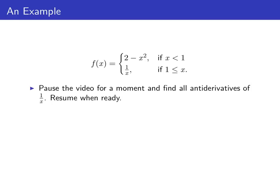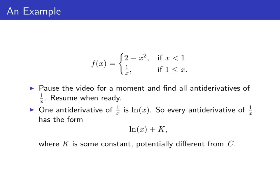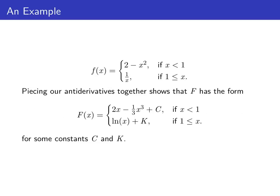Now consider the part of f defined when x is greater than or equal to 1. We know one antiderivative of 1 over x is the natural log of x, so every antiderivative of 1 over x is the natural log of x plus some constant — we'll call that constant k. Note that k is potentially different from the constant c we found earlier.